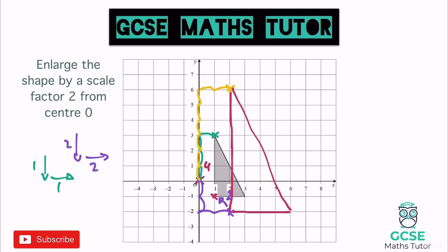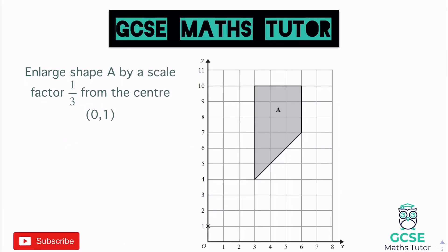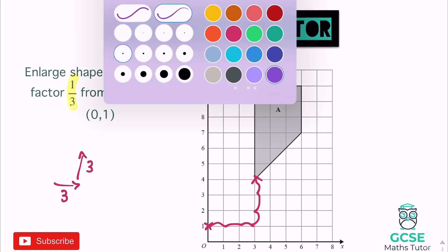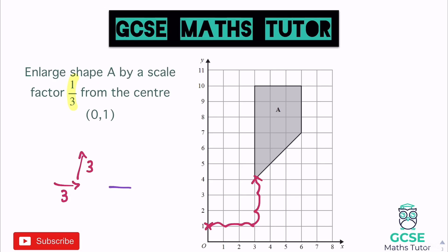Something slightly different now — a fractional scale factor. Enlarge shape A by a scale factor of one third from center (0,1). That center is just here with a cross already on it. A scale factor of one third is going to make the shape smaller — one third of the size, or dividing each side by three. Picking the closest point: to get there it's three across and three up.